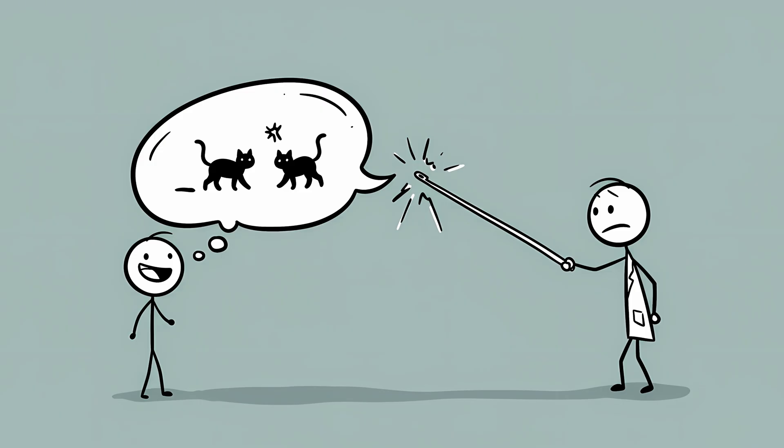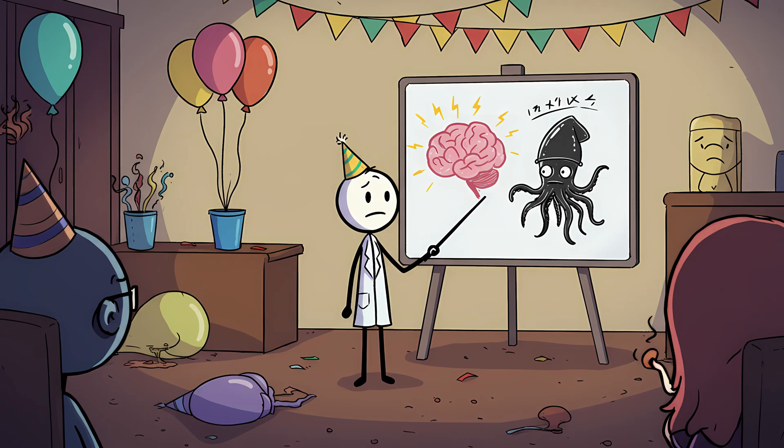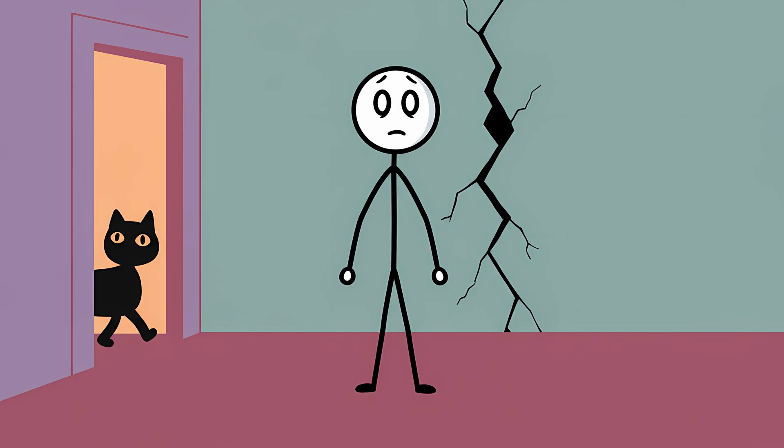As much as we'd love for this to be true, it's probably not. Neuroscientists, who are notoriously boring at parties, will tell you that the explanation likely involves firing neurons, not sentient squid bots. But the glitch in The Matrix theory perfectly captures the feeling of Déjà vu.